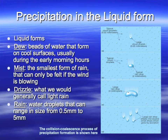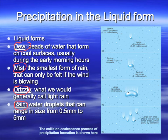Precipitation in liquid form: there's dew that forms directly on the surface, and then basically three forms of rain. Mist is very very small — you can only notice it if you're moving or if the wind is blowing. Then there's drizzle, which is more or less light rain. Then you have rain, which can be a variety of different sizes: large raindrops, small raindrops, heavy rain, light rain, or those giant thunderstorm drops that go thwap on your windshield when you're driving.